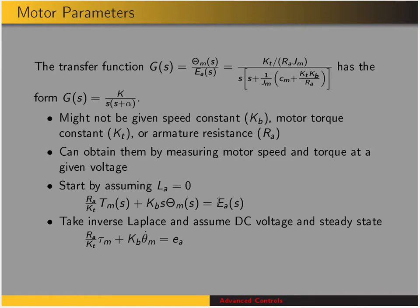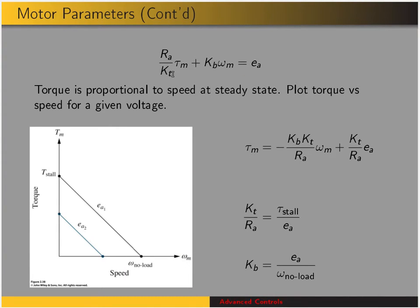We'll take the inverse Laplace transform and assume the applied voltage is constant DC voltage and the system has reached steady state. In that case, none of these are functions of time — the motor torque and motor speed will be constant for a given voltage. Here's the expression relating motor torque to motor speed and applied voltage. We get that torque is linearly related to motor speed at steady state. Rearranging to torque as a function of motor speed and voltage, if we plot this line, the y-intercept is called the stall torque and the x-intercept is the no-load speed. From this expression we can get the parameters needed for the transfer function.